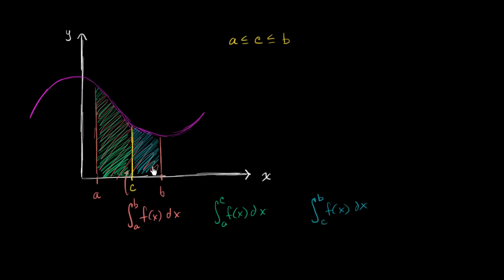Well the one thing that probably jumps out at you is that the entire area from a to b, this entire area, is just a sum of these two smaller areas. So this is just equal to that plus that over there.